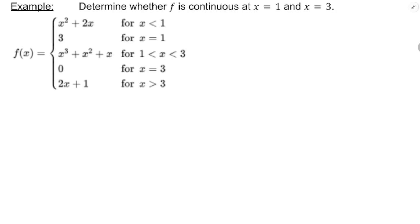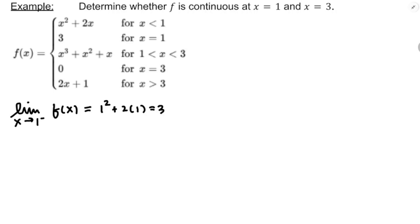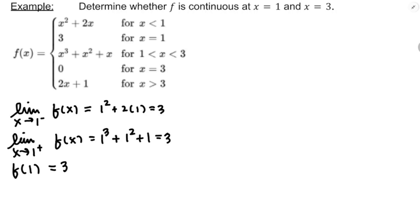The last piecewise example: determine whether the function is continuous at x equals 1 and x equals 3. We analyze the limits and the value of the function. For x equals 1: the limit from the left uses x squared plus 2x, giving 1 plus 2 equals 3. The limit from the right uses x cubed plus x squared plus x, giving 1 plus 1 plus 1 equals 3. And f of 1 equals 3. Since all three are the same, f is continuous at x equals 1.